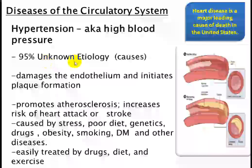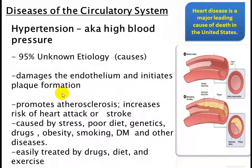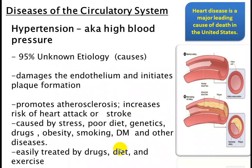To summarize: 95% of hypertension has unknown etiology. Damage to the endothelium initiates plaque formation and atherosclerosis, which can cause heart attack or stroke. Other known causes include stress, poor diet, genetics, obesity, smoking, diabetes, and kidney disease. Treatment starts with diet and exercise; if that fails, drugs are used.